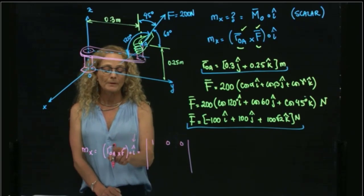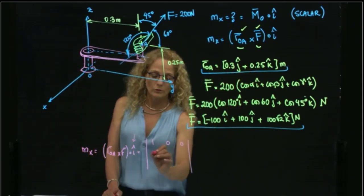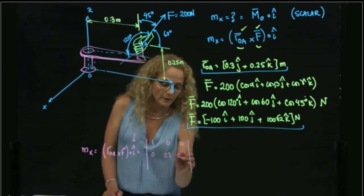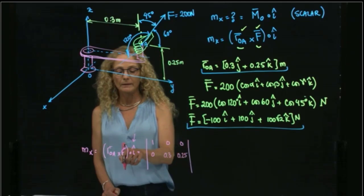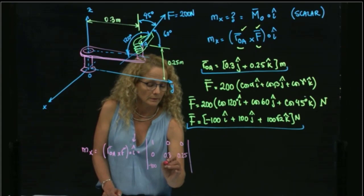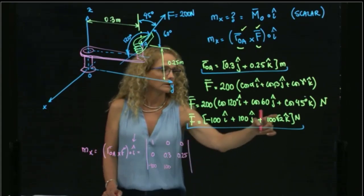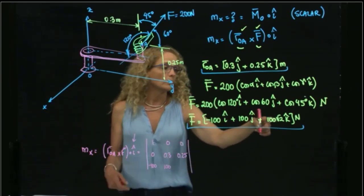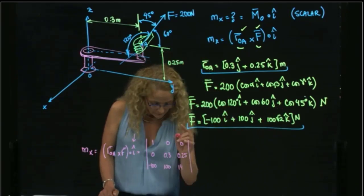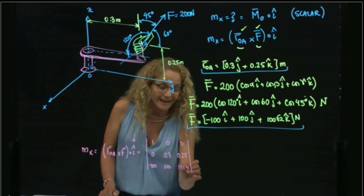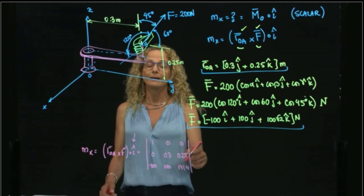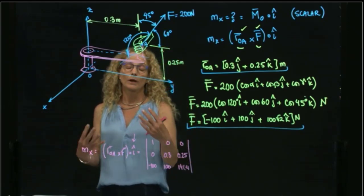And then I put in my second row this vector, so you have 0, 0.3, 0.25. And in the third row, I put my vector of the force, which is negative 100, 100. And I can already multiply, but you can always leave the square root by the end, or you can multiply the square root. But be careful always to maintain enough decimals, even though I don't write them. I maintain many decimals in order to not carry rounding errors.